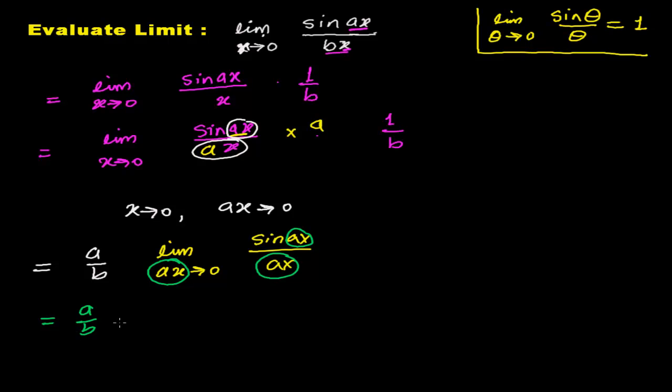So here, limit as angle tends to 0 of sine angle over angle equals 1. So a over b times 1, and finally I got the answer a over b. That's my answer, that's the limit I need to find out.